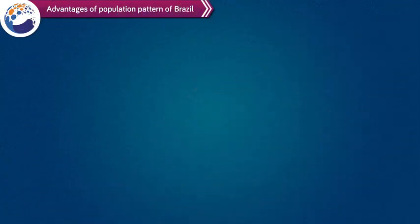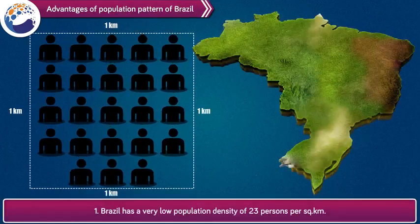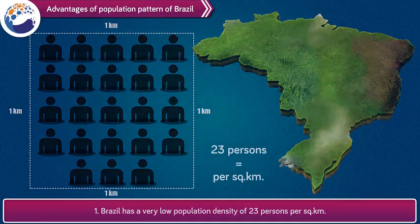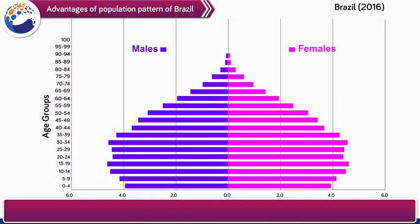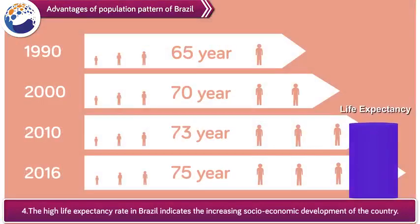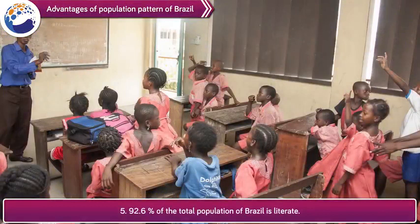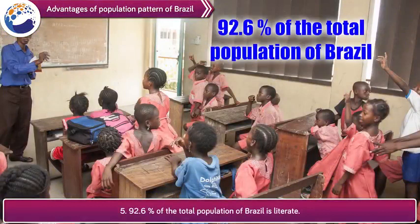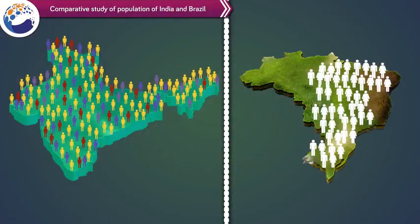Let us now understand the advantages of the population pattern of Brazil. 1. Brazil has a very low population density of 23 persons per square kilometer. 2. Brazil has a favorable female sex ratio. 3. The proportion of working population (youth) in Brazil is high. 4. The high life expectancy rate in Brazil indicates the increasing socio-economic development of the country. 5. 92.6% of the total population of Brazil is literate.